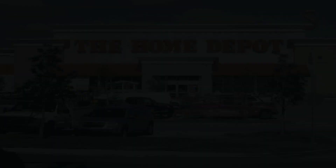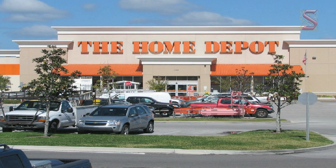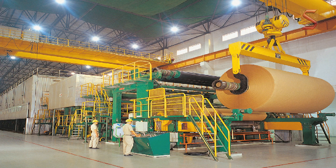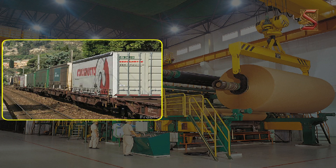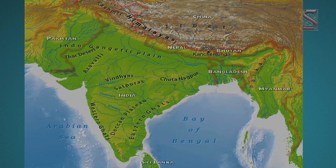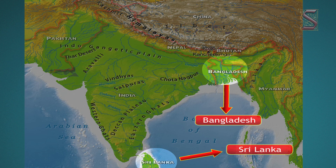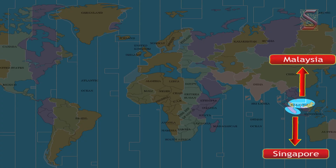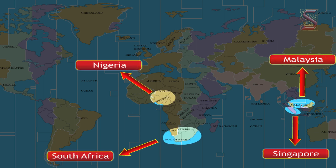Now that the paper is produced, let us see how the paper is sold. There are marketing depots for the paper mills in different cities. With developed railways and roadways, it is easy for the transportation of paper to the markets. In addition, paper is also exported to countries like Sri Lanka, Bangladesh, Nepal, Malaysia, Singapore, Nigeria and South Africa through the marketing depots.